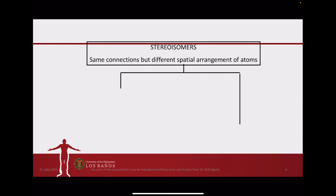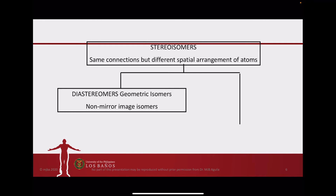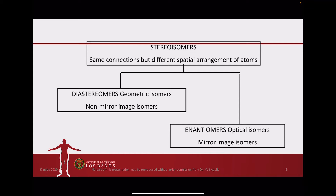Now for stereoisomers, these are the ones which have the same connections for the atoms, but if you take a look at this in 3D space, there is a different spatial arrangement for the atoms. There are two types: diastereomers and enantiomers. Diastereomers, or geometric isomers, are isomers that are not considered to be mirror images of one another, whereas enantiomers, or optical isomers, are those isomers that are mirror images of one another.